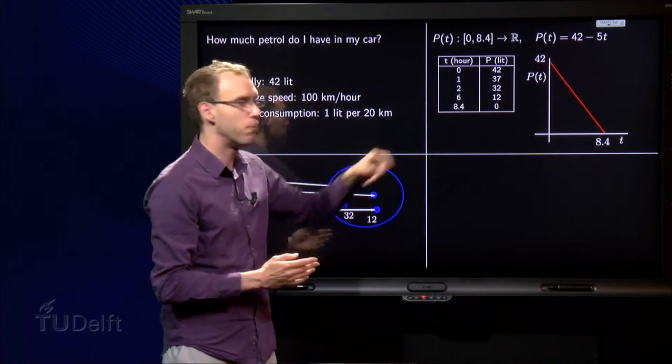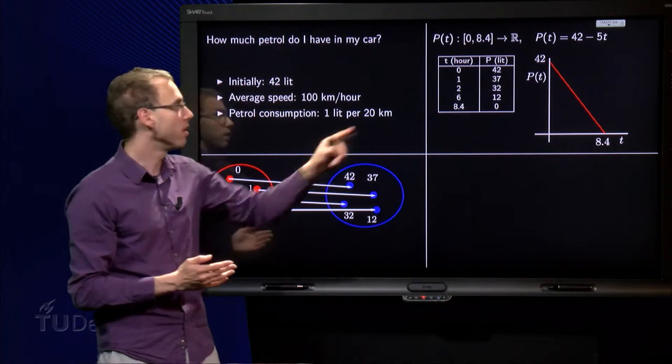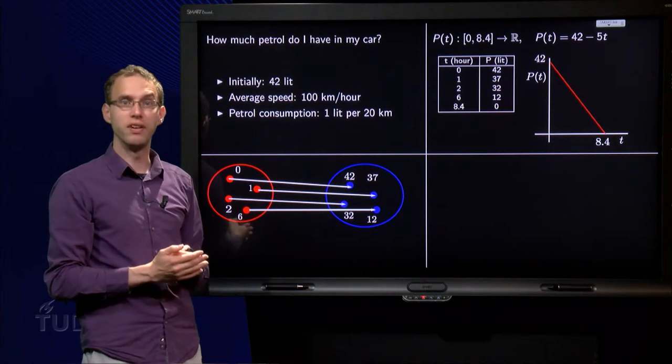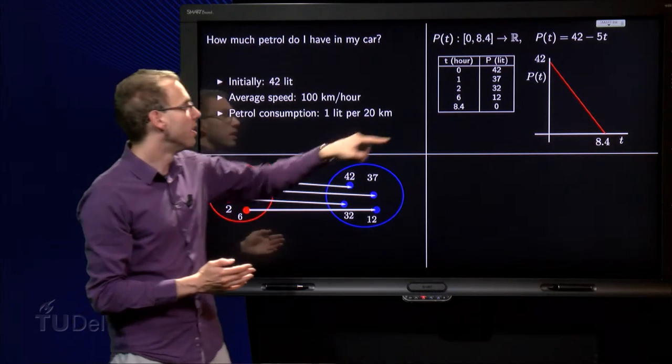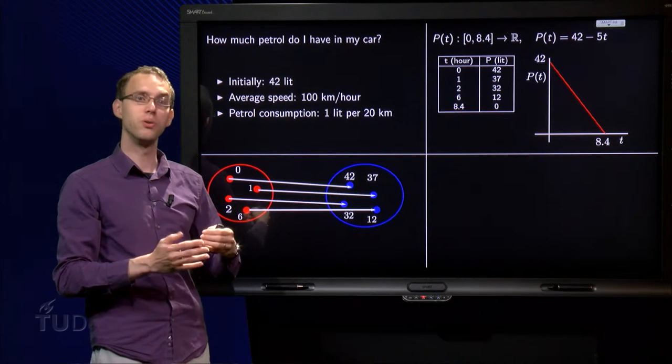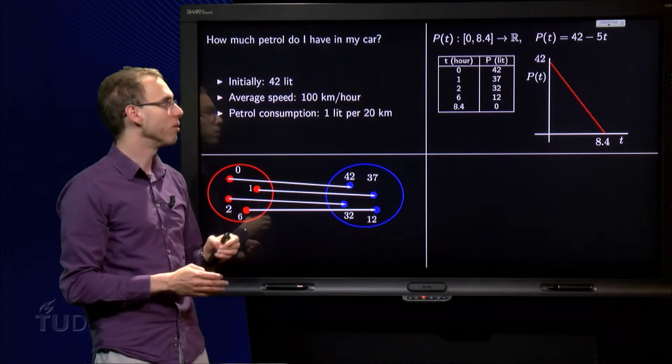And then you see the last value I can plug in is 8.4, then I will have 0 liters left, because we cannot have a negative volume in the tank. So, that's another way to represent the function, which tells you how much petrol I have after a certain amount of hours.